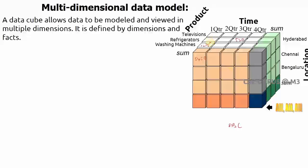So basically, product, time, and location are the three dimensions. The organization wants to keep records structured along these three dimensions.